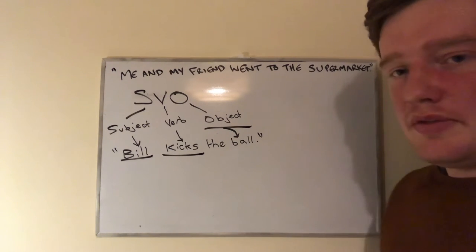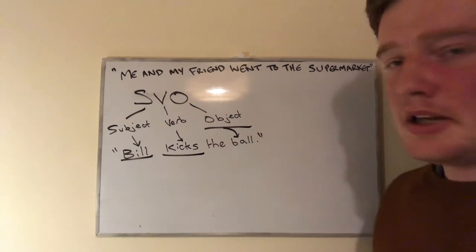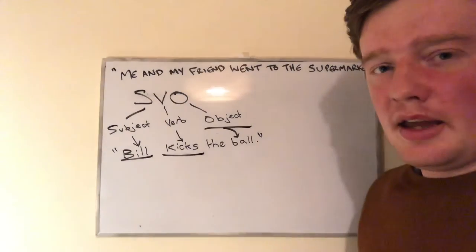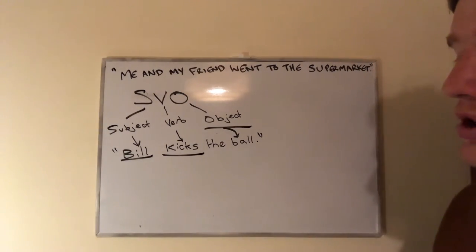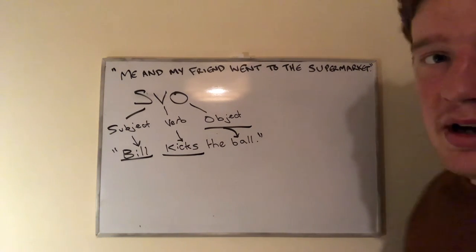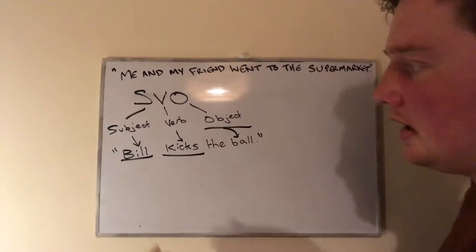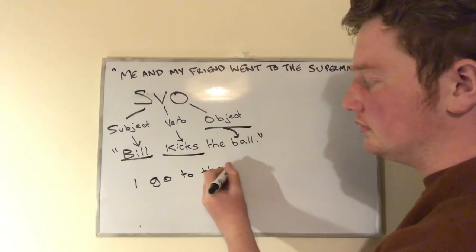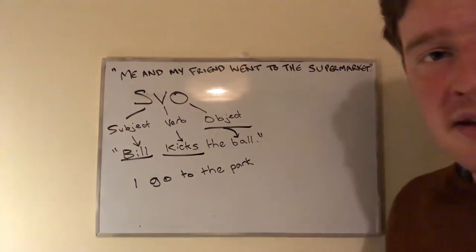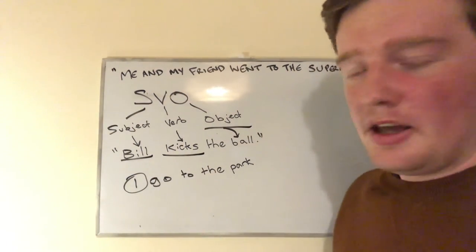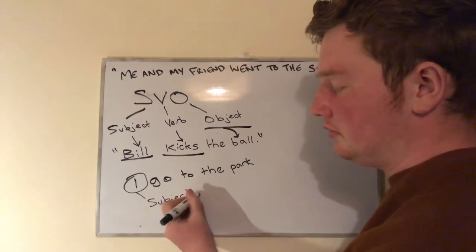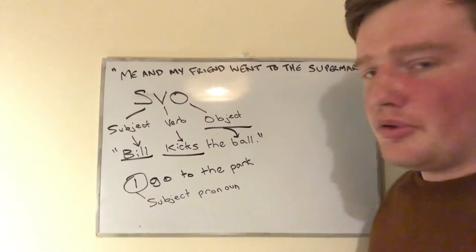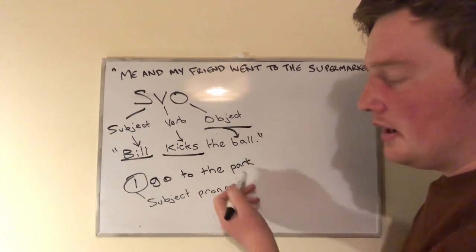Objects receive the action from the subject. In English we have subject pronouns and object pronouns. For example, I can say 'I go to the park.' In this case, I would be a subject pronoun, given that I is performing the action. The verb would be go and the object would be park.